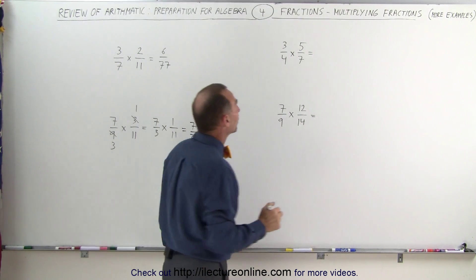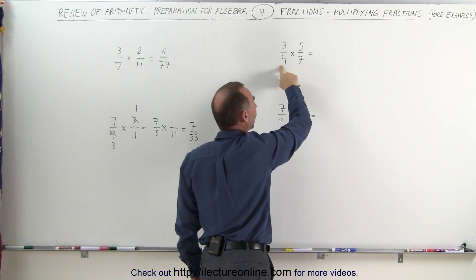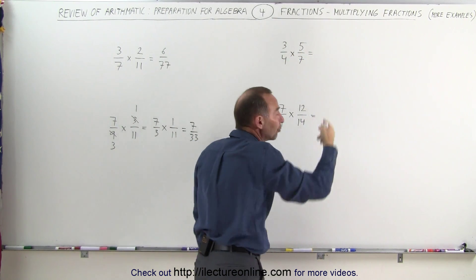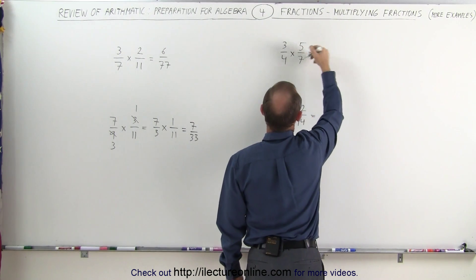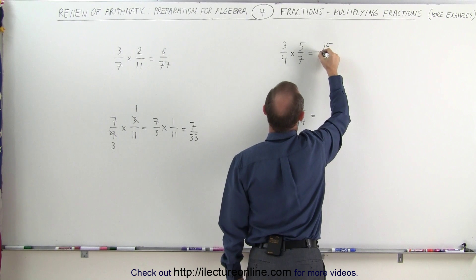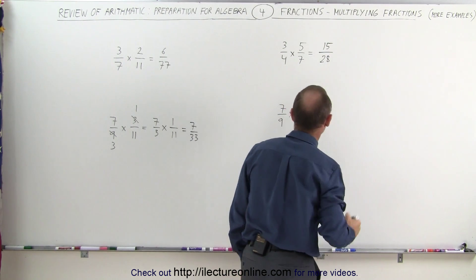On that example right here, notice that 3, 5, and 7 are all prime numbers. 4 is not, but I cannot reduce 4 with any other number there, which means that this becomes 3 times 5, which is 15, and 4 times 7, which is 28, and that's the final answer.